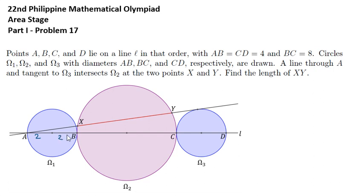Also, the diameter of omega 3 is 4, so its radius is also 2. For omega 2, the given diameter is 8, so its radius is 4.